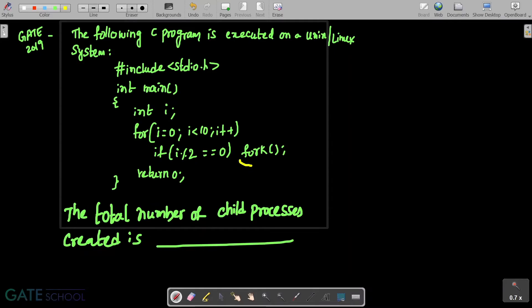This question is related to fork system call. How many times is this fork system call called here? It depends on how many times this if condition is evaluated to true.